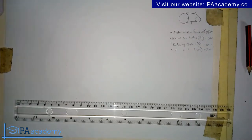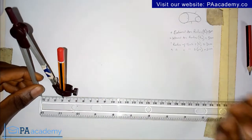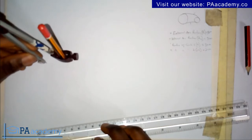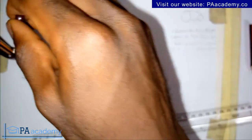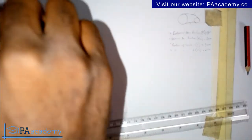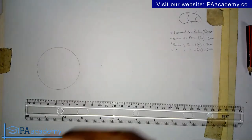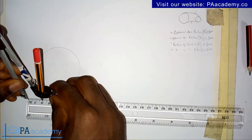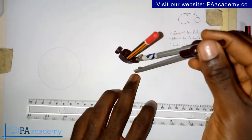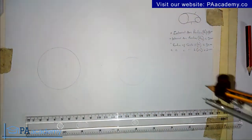To start with, let me draw the first circle with a radius of 3 cm. I pick my compass, measure 3 cm, and draw my circle. Now let's go ahead and measure the second circle with a radius of 2 cm. So now we have our two circles.